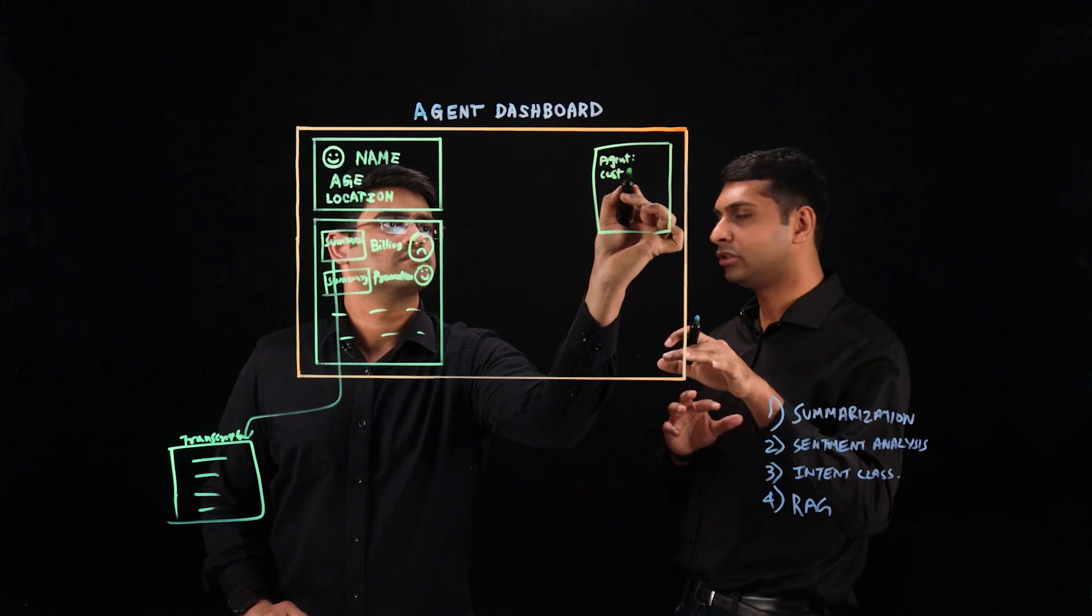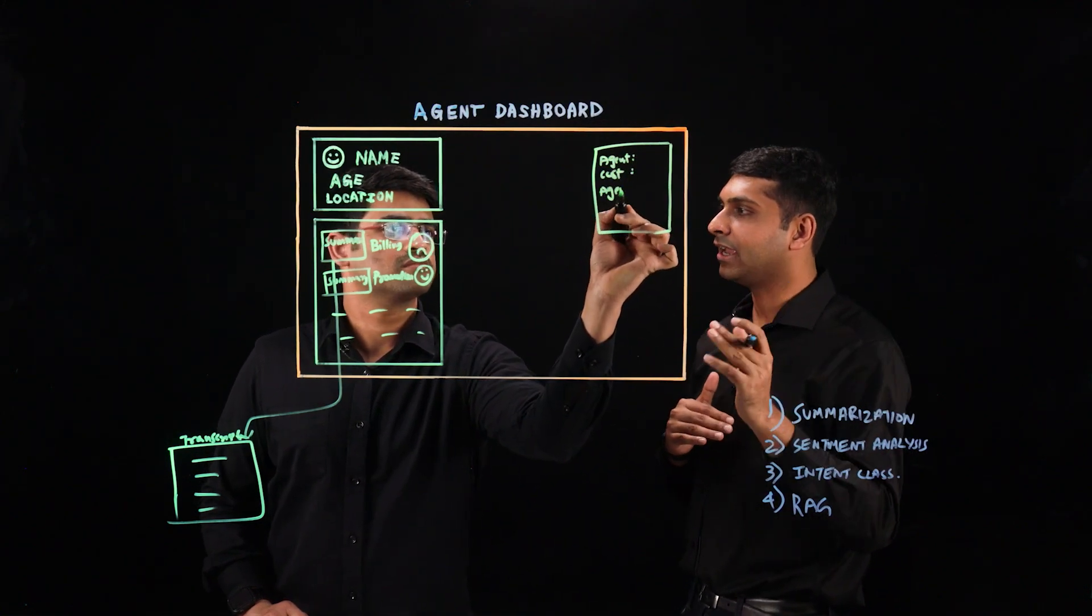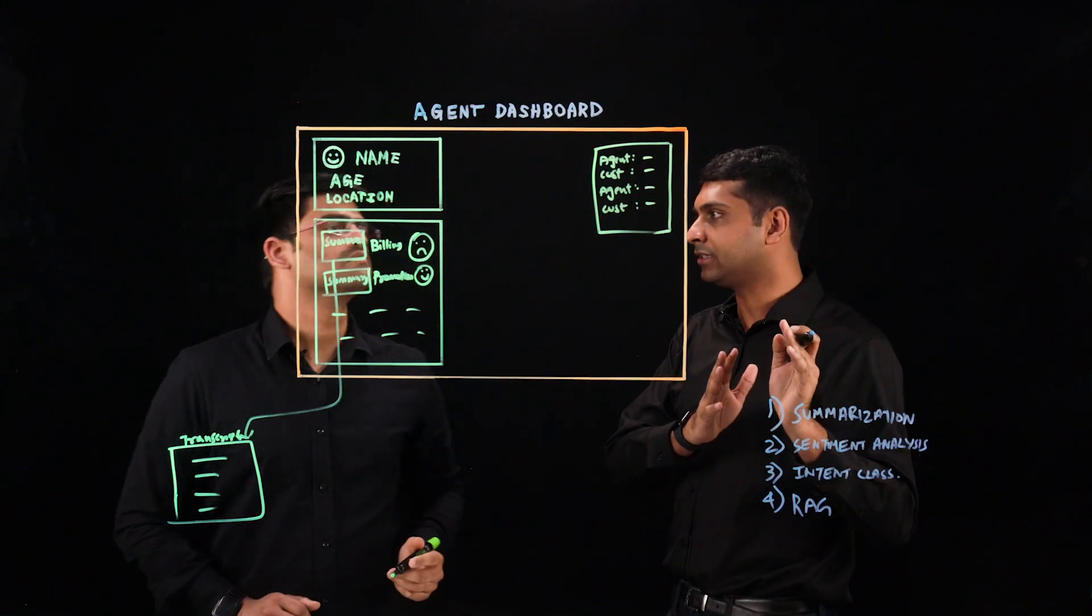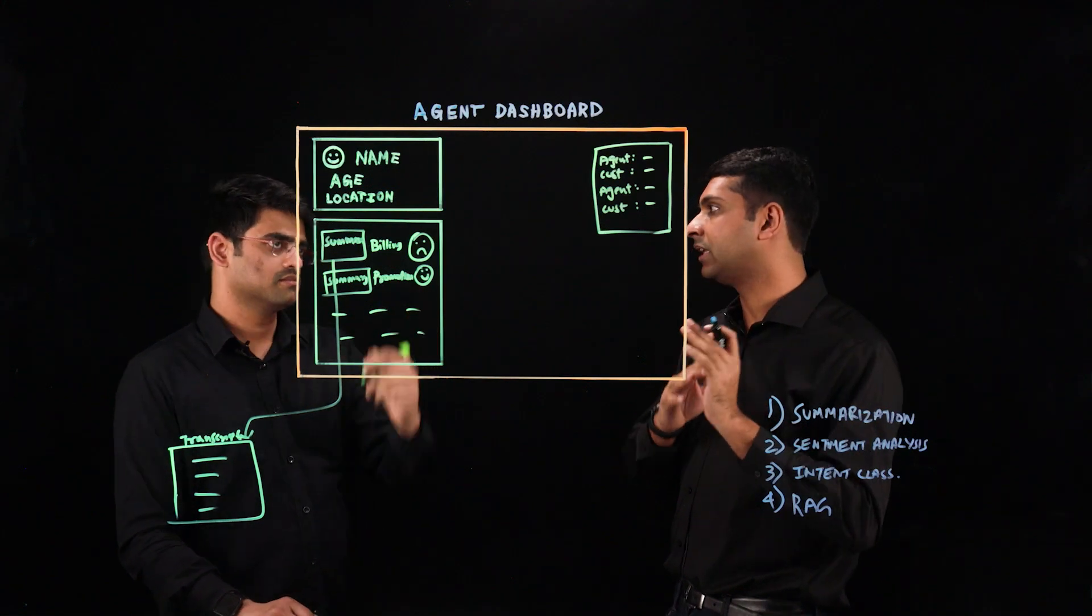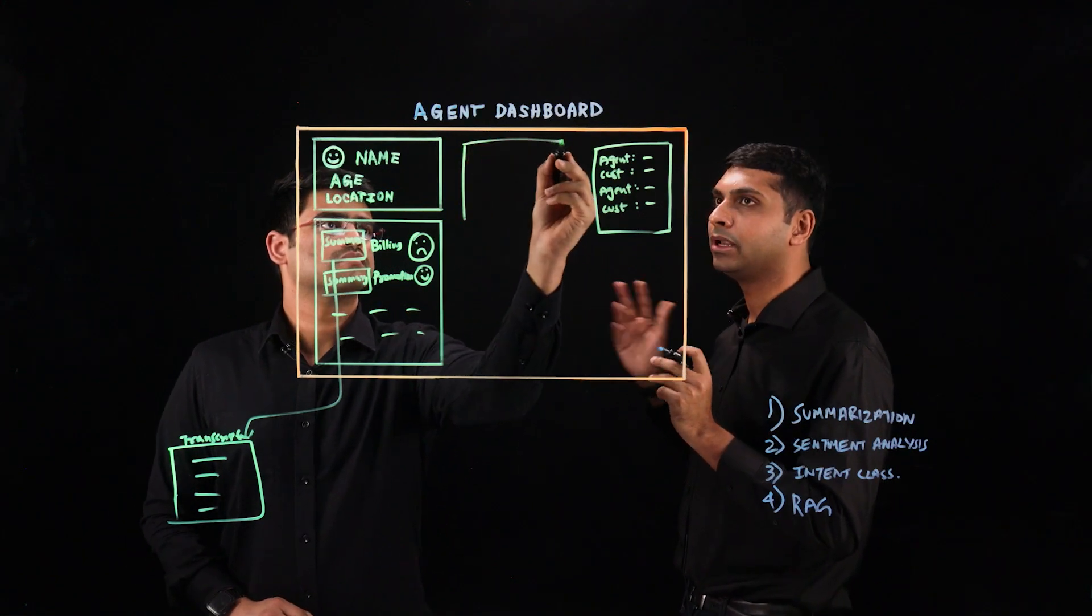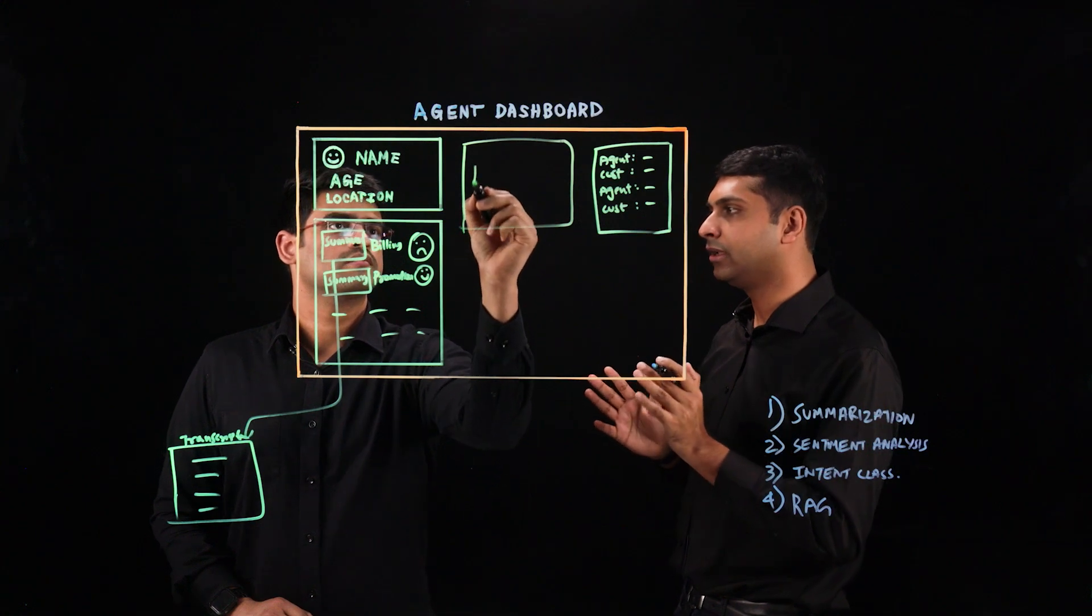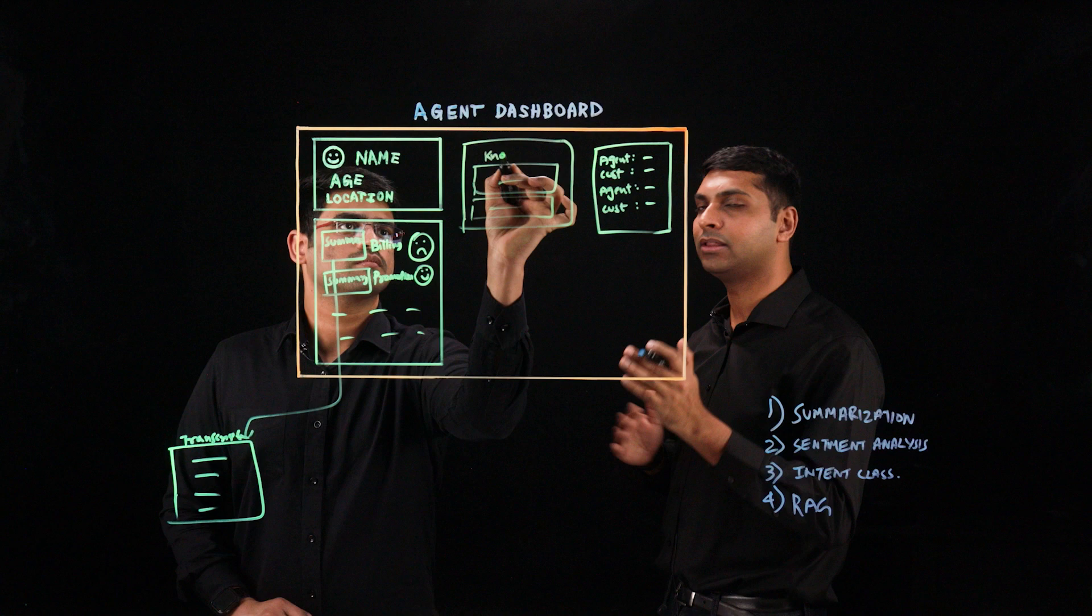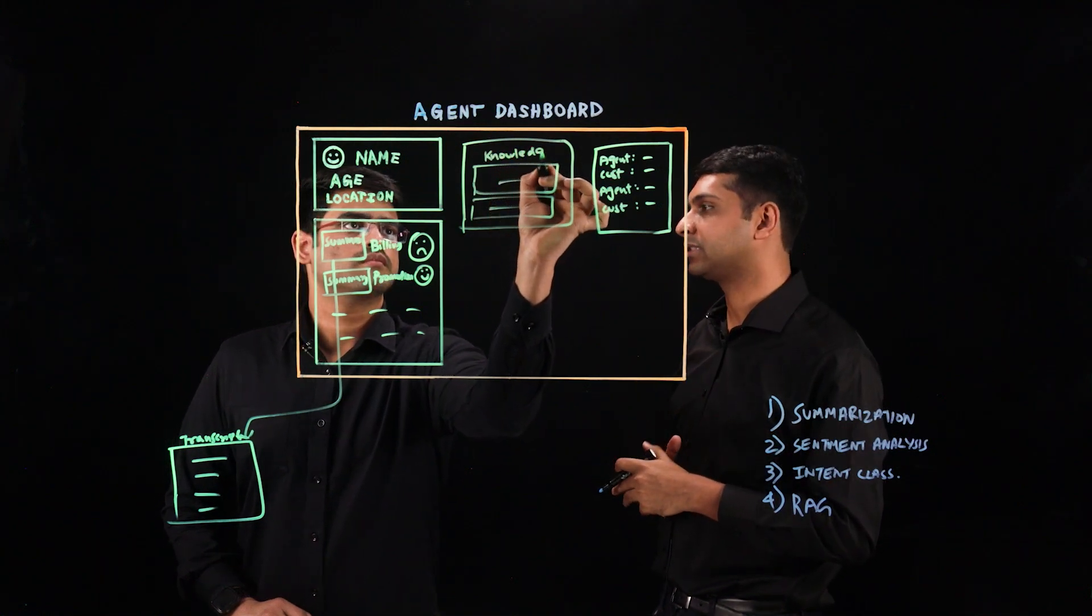So instead of typing out the question, imagine if AI could automatically be listening into the conversation so we could have the speech to text listening into the conversation, that text then sent to the large language model, which can then bring up the relevant information and present it to the agent so that the agent is knowledgeable about any topic that a particular customer is asking about.